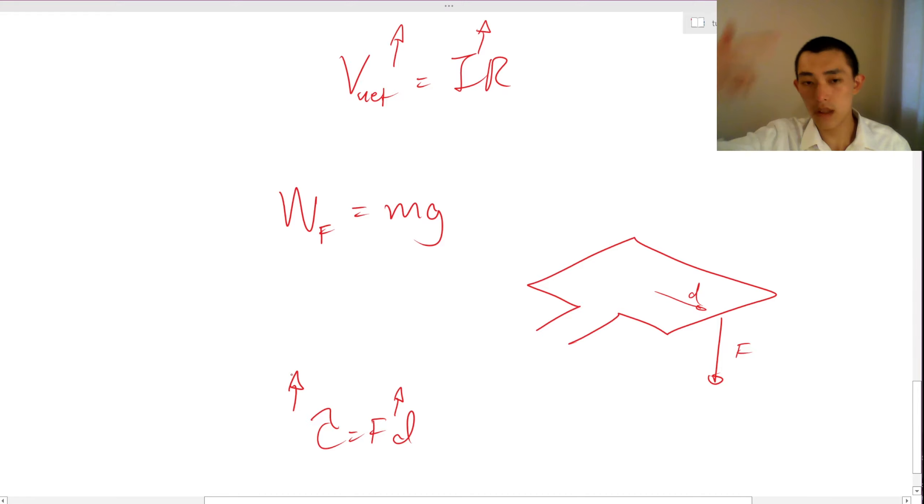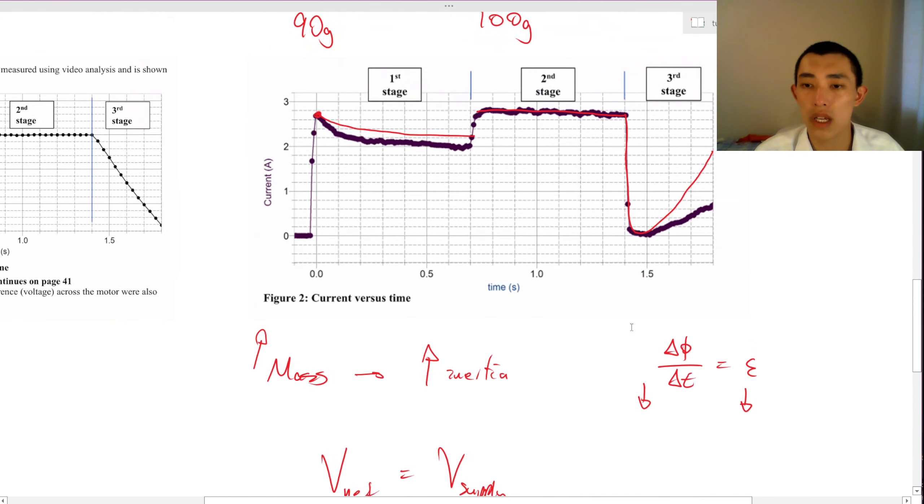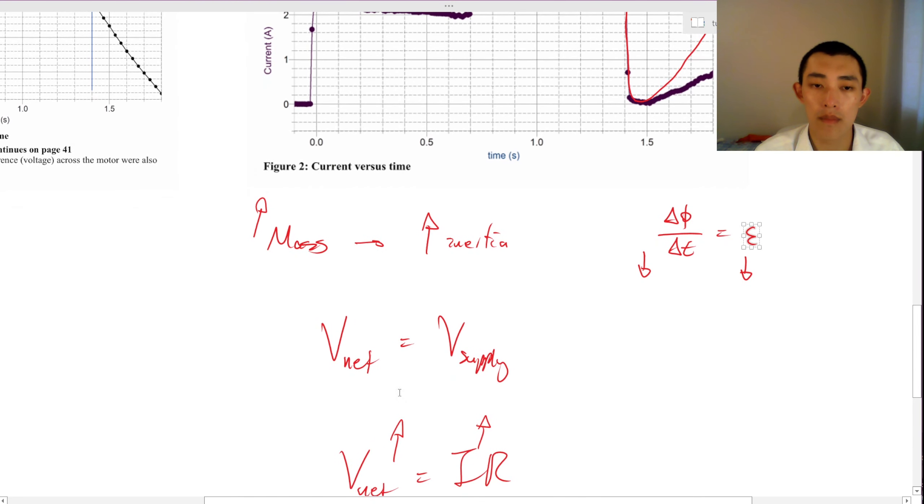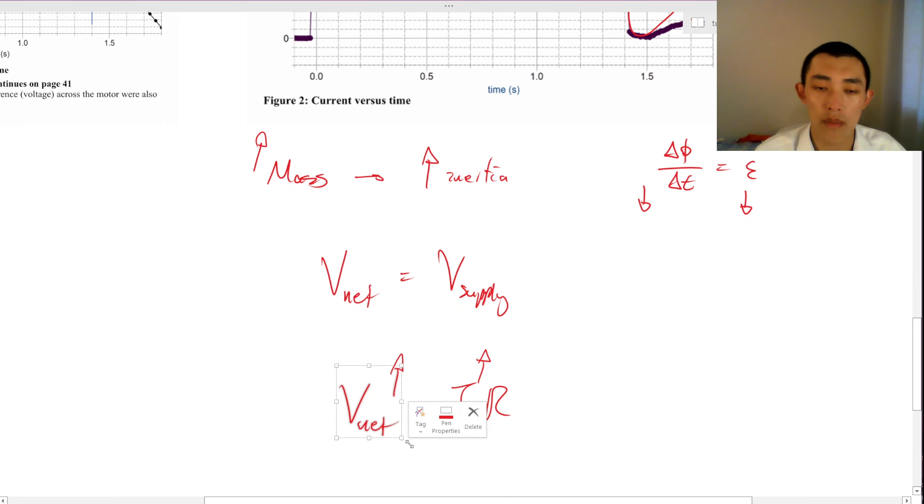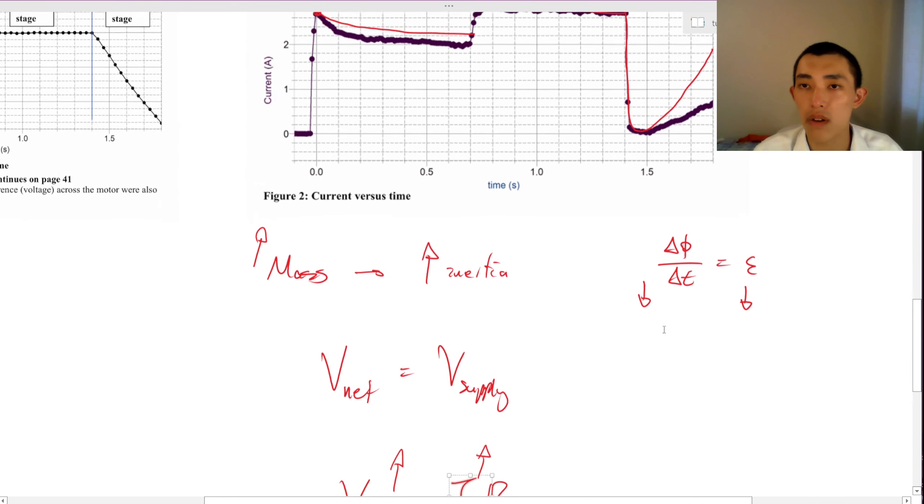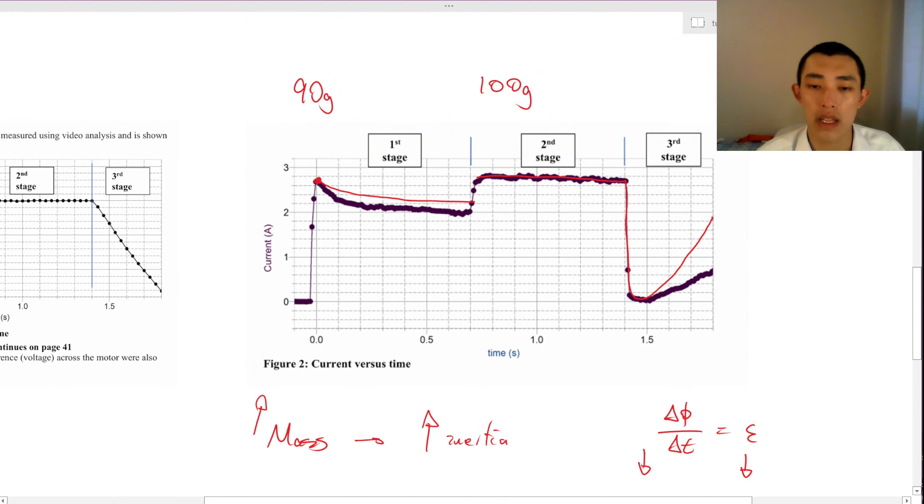We increase the turning potential. We increase the rate of turning. If we increase the rate of turning, more change in flux, more EMF. And if we have more EMF, then we have more voltage. If we have more voltage, then we have more current. And hence, the current skyrockets like that.